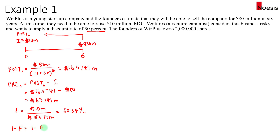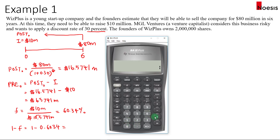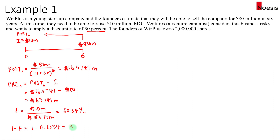The founders hold 1 minus 0.6034, which gives 0.3966 — that's 39.66%. Now if you're calculating the number of shares held by the VC: